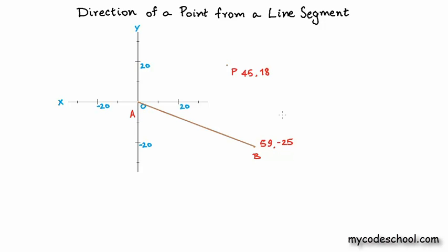Since A is now at the origin, to decide whether P is to the left or right of AB we simply compute the cross product B cross P. If it is positive, P is to the left — which it is in this case. If it is negative, P is to the right. One interesting edge case: if the cross product is exactly 0, P is neither to the left nor the right. If we extend AB infinitely in both directions, P lies somewhere along that line.